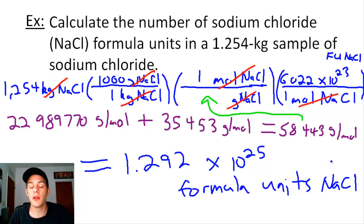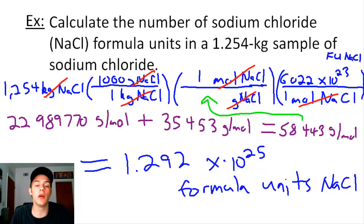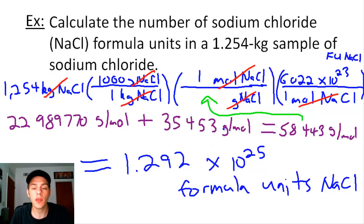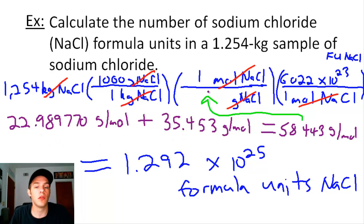There you have it — this is very similar to calculating the number of atoms in a sample of an element. The only extra step is adding together the molar masses of the individual elements that compose your compound. I hope this video helped you out. Take it easy.